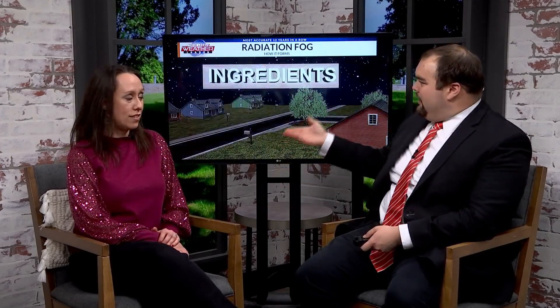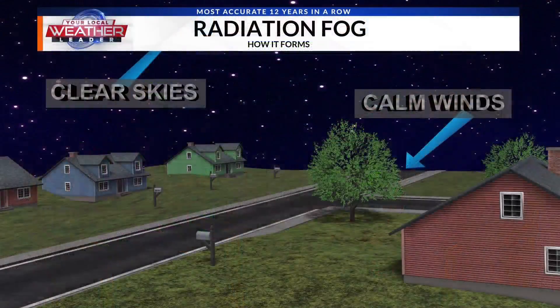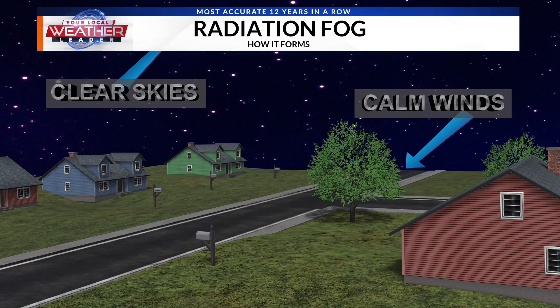What happens is during the day we collect a lot of radiation from the sun — that's how our planet gets warm. So the ingredients you need are basically clear skies. We lose that radiation; it starts to lift out of the solid surfaces and the ground and move up. But calm wind, and sometimes even a stable layer aloft, really helps with that. So you also need moisture in the atmosphere to cause radiation fog.